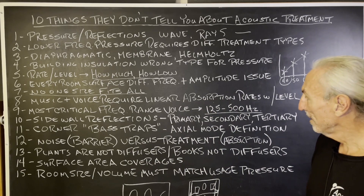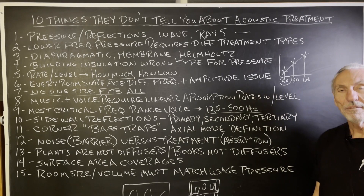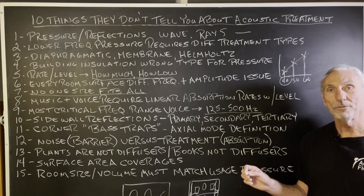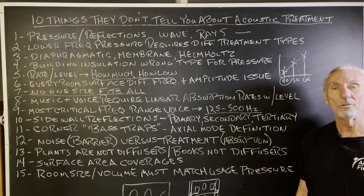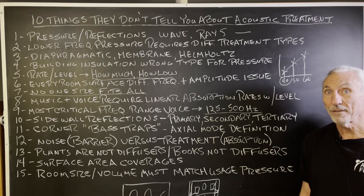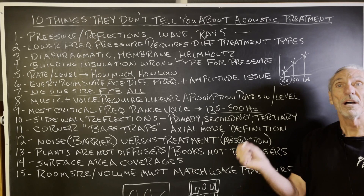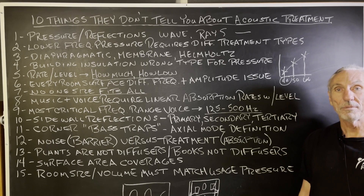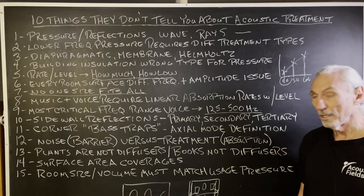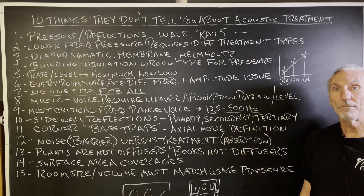Corner bass traps — the definition of an axial mode is unwanted lower frequency pressure between two parallel wall surfaces, not two parallel corners. Companies will tell you to put a product in the corner and your low frequency issues are resolved. No, they're not. The corner is five to ten percent of the surface area of the whole wall. How can treating five or ten percent of the surface area solve the whole problem? It doesn't. Spend your money treating the whole wall — you'll be better off.